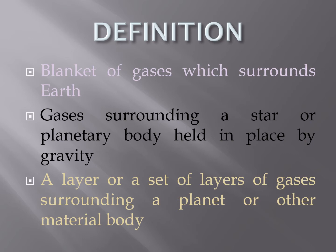Atmosphere is defined as a blanket of gases which surrounds the earth, or we can also define it as the gases which surround any star or planetary body. These stars or planetary bodies are held in place by the gravitational force, or we can define it as a layer or set of layers of gases surrounding any planet or any other material.